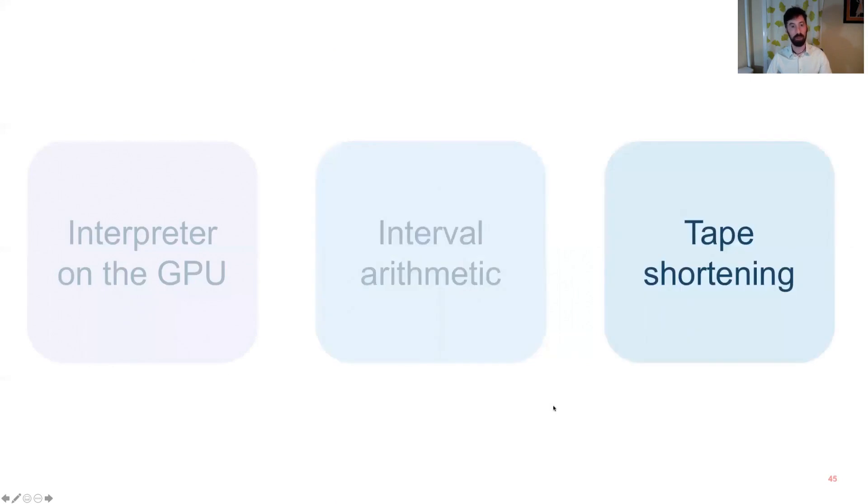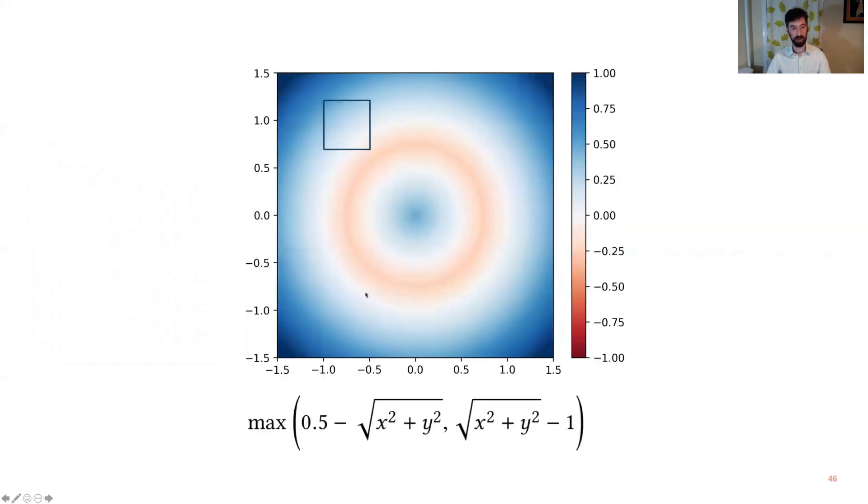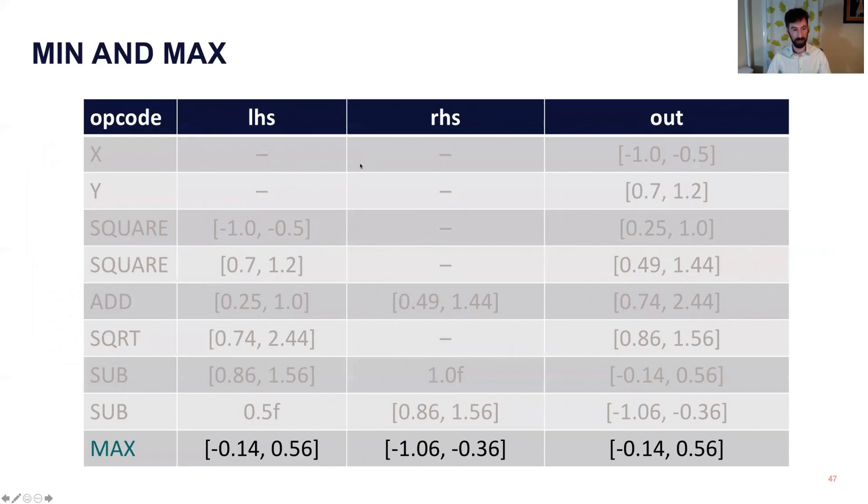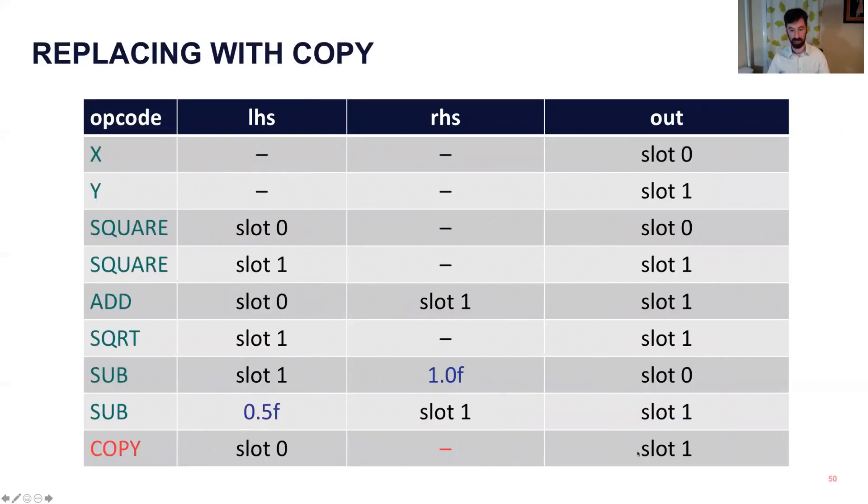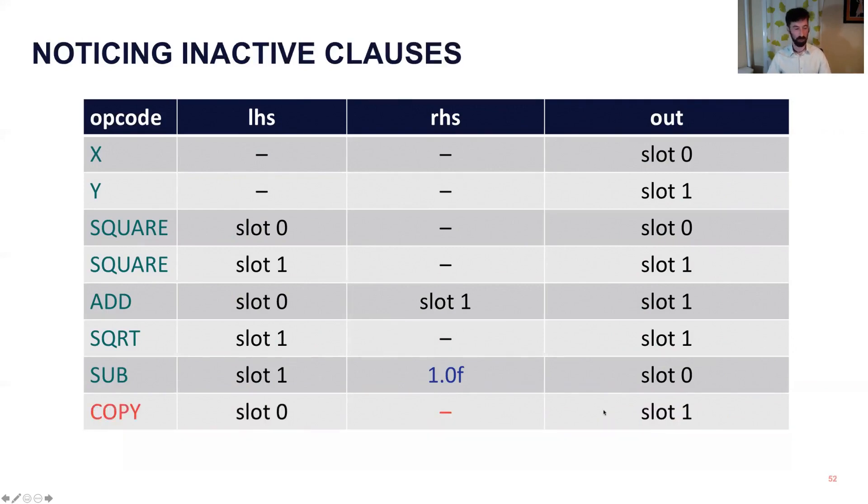The third building block is what we call tape shortening, and this is the trick which actually makes our algorithm work. So if you look at this shape, you remember that there's a circle of radius 1 and then a negative circle of radius 1 half that's being cut out of it. That's the two components in max here. But our interval here, this region, only actually cares about the outer circle, and the cool part is you can see that in the equation. So here the left-hand side, these intervals, these conservative bounds, the left-hand side is always bigger than the right-hand side because its lower bound is above the right-hand side's upper bound. And what this means on an intuitive level is we can take this max operation and within that square in space replace it with just a copy from slot 0 to slot 1. Once we do that, we notice that the previous operation writes to slot 1 but that value is never used, so we can skip that, shorten the tape.